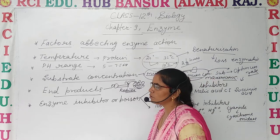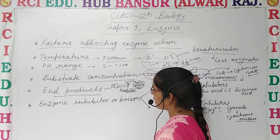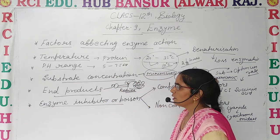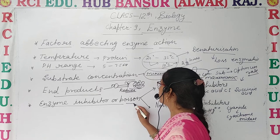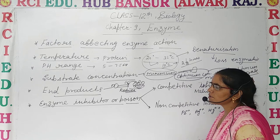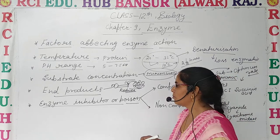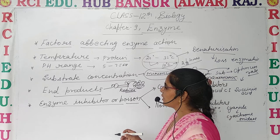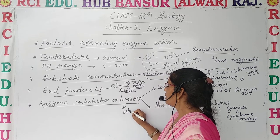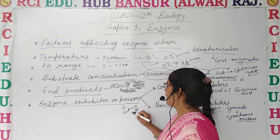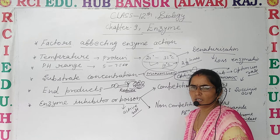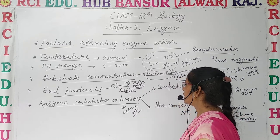End products also affect and decrease the enzymatic activity. The last factor which affects enzymatic activity is enzyme inhibitors or poisons. Enzyme inhibitors are substrates which affect enzyme activity by binding with the active sites of the enzyme, making those active sites non-functional and unavailable for the substrate, thereby reducing enzymatic activity.